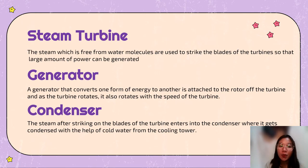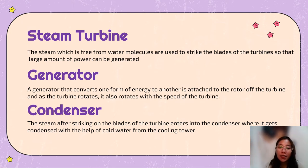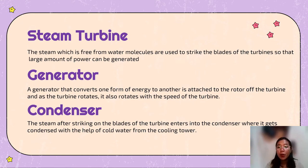The next one is the steam turbine. The steam which is free from water molecules is used to strike the blades of the turbine so that a large amount of electricity can be generated. The next one is the generator. The generator that converts one form of energy to another is attached to the rotor of the turbine, and as the turbine rotates, it also drives the generator.